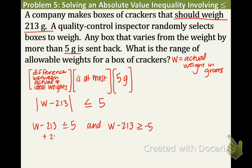Now we only have one step on each inequality to get the W by itself. Add 213 to both sides. And we get 218 right there. And add 213 to both sides again. And you get 208.